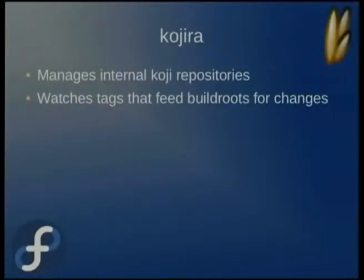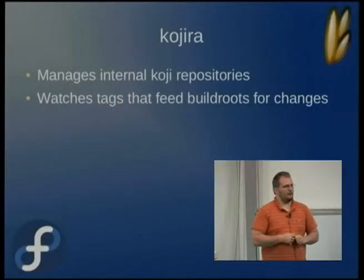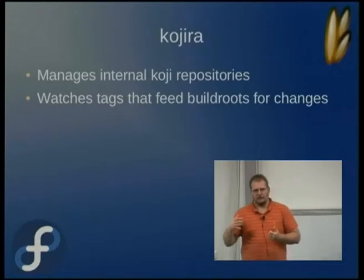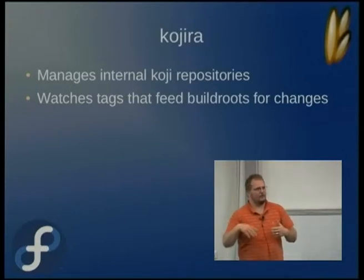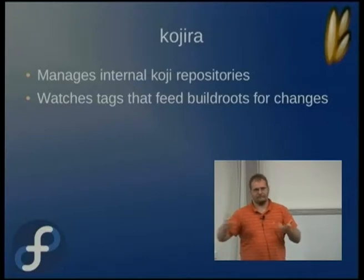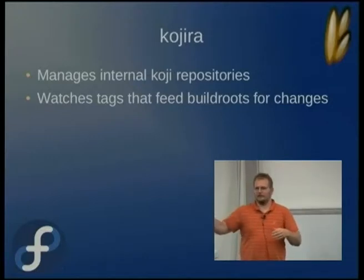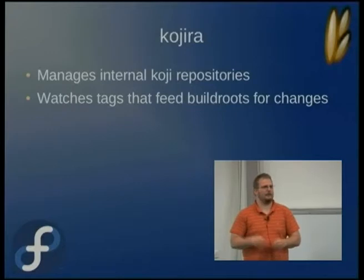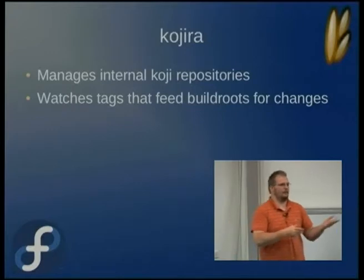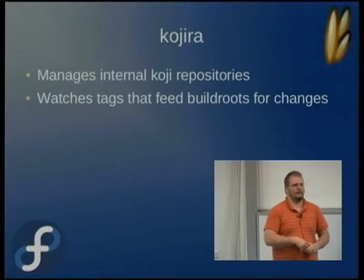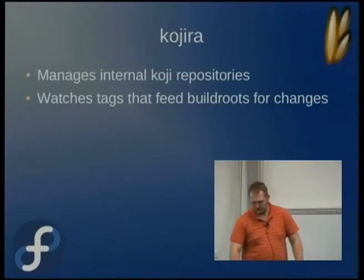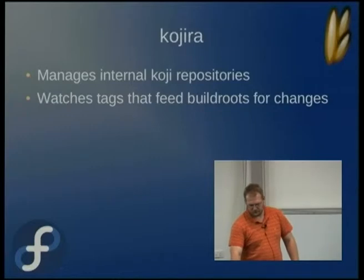Koji Raw manages the repositories used internally inside of Koji. It watches the tags and sees when you've built something and it's landed in a tag that feeds a builder — then it goes ahead and creates a new repository with the latest packages in the tags.